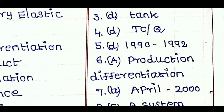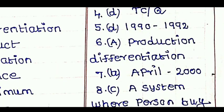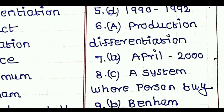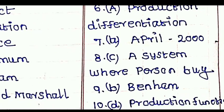Question number 5 option D, 1992. Question number 6 option A, Production and differentiation. Question number 7 option B, April 2000. 8th option C.